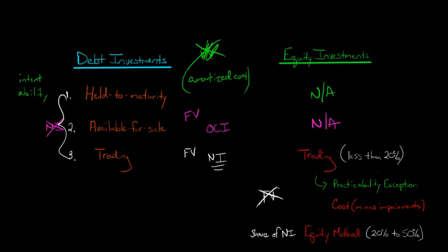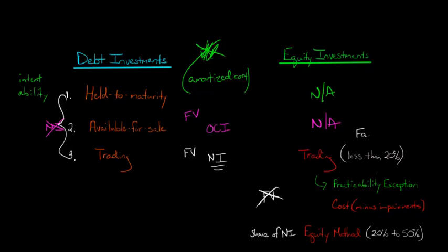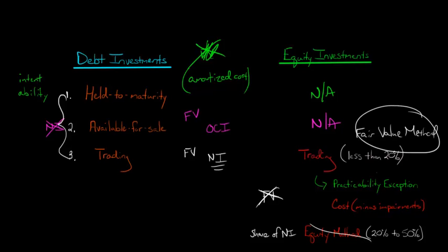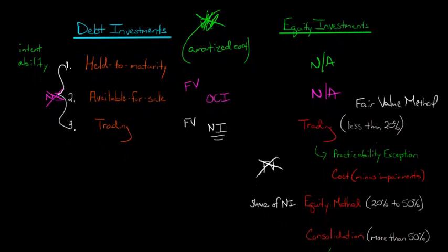There is an option to use the fair value method — which for equity investments is what they call the trading method — even if you have between 20% and 50% ownership. You can elect to say you don't want to use the equity method and instead use the fair value method. However, it's an irrevocable election, so once you've made it, that's it.